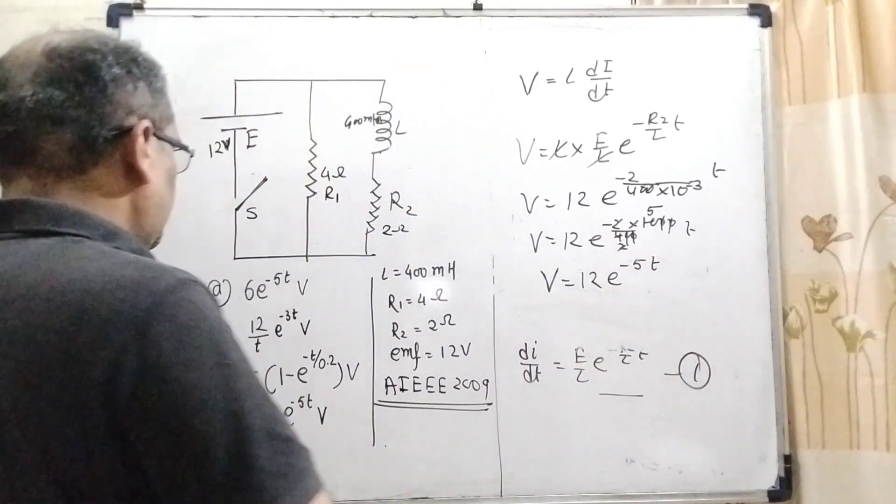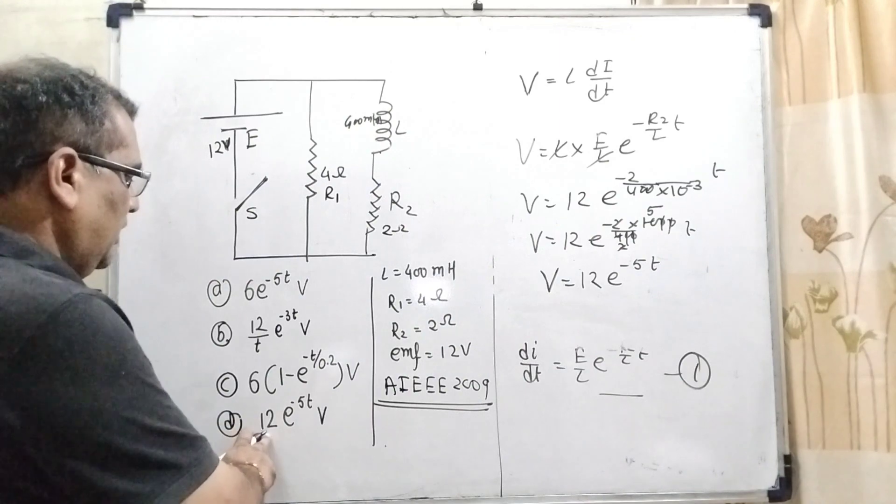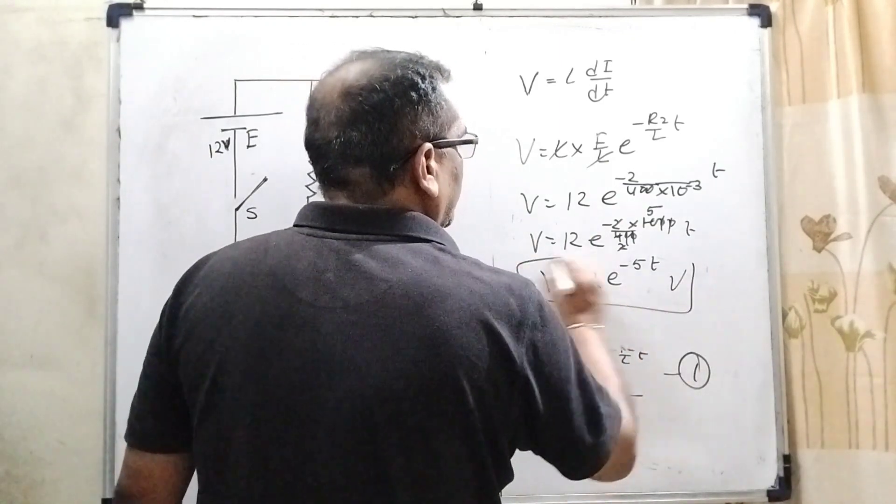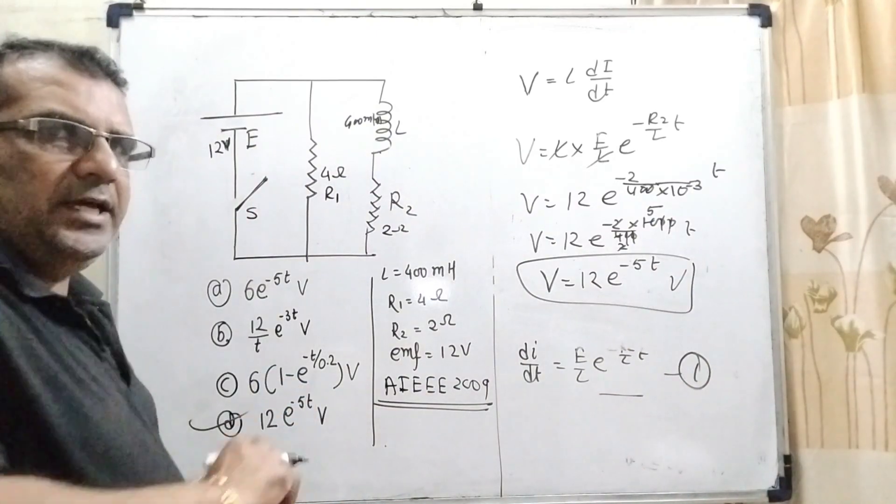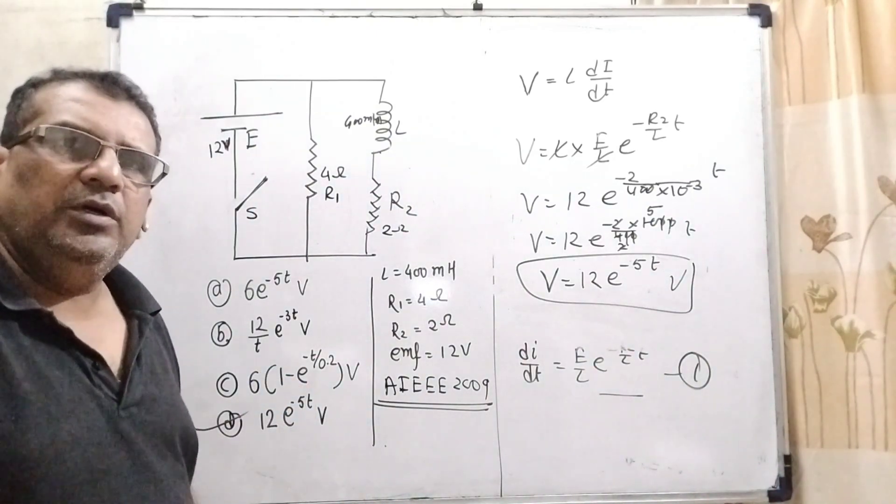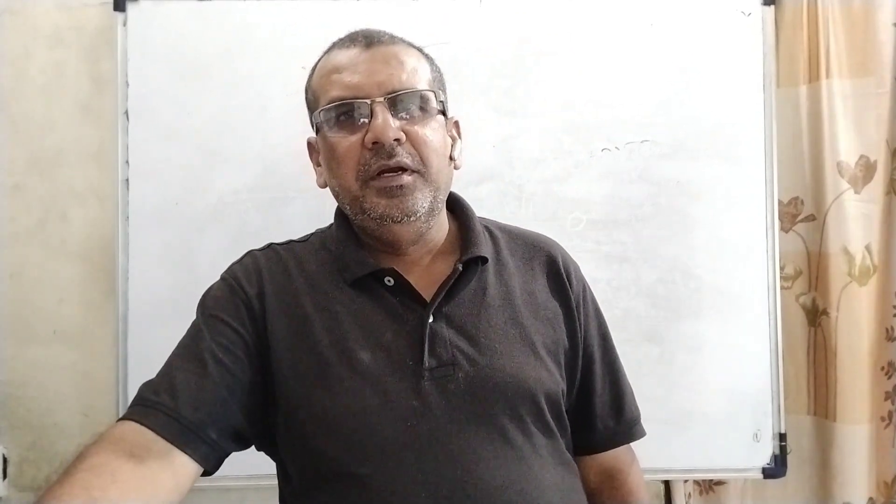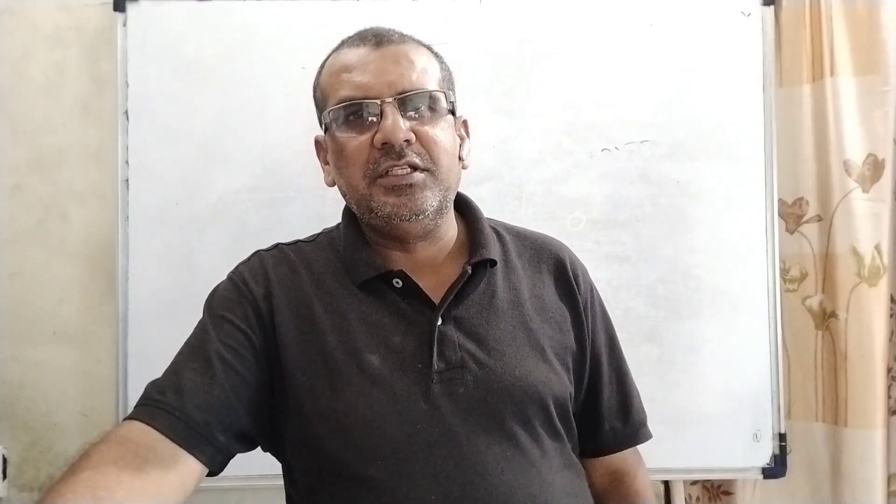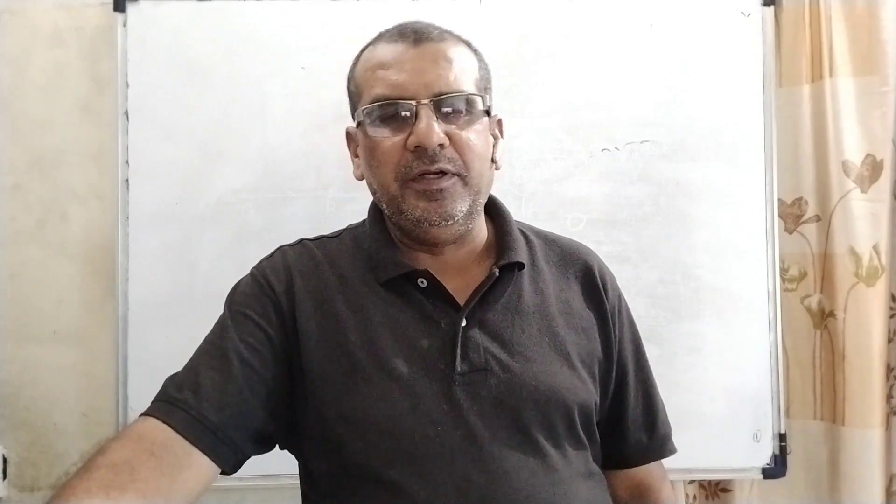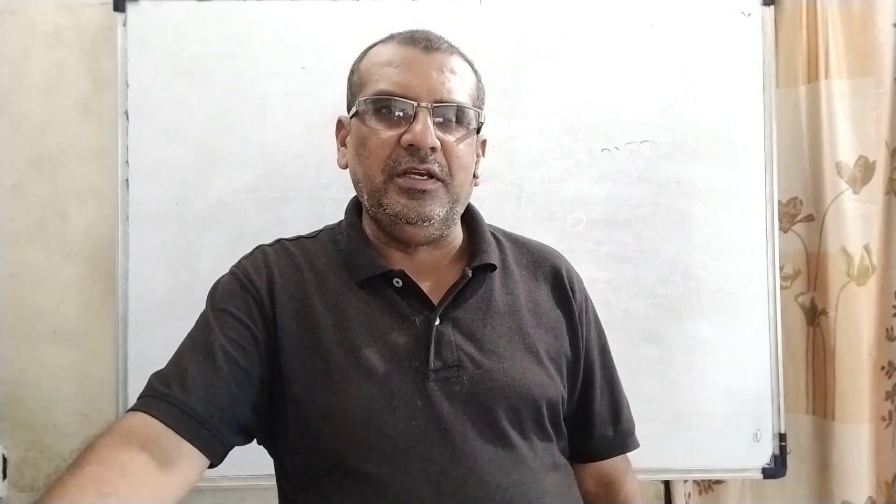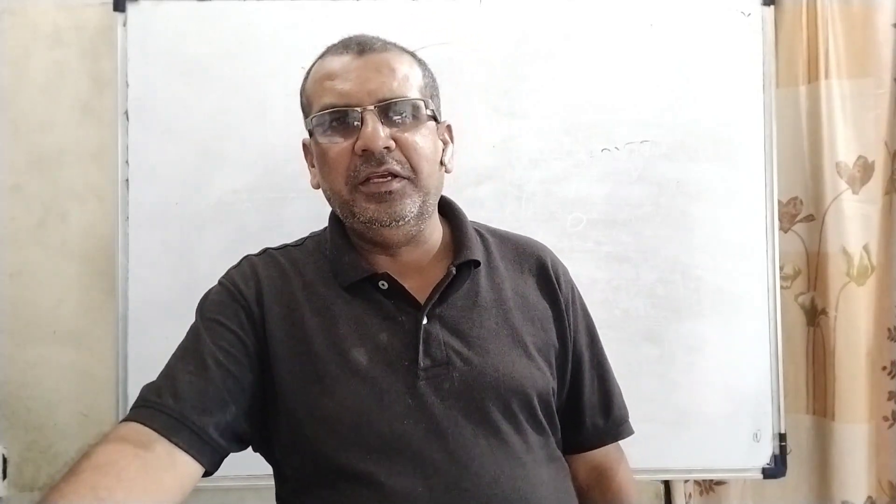Let us see which option is matching here. 12 E raised to power minus 5T volt. So here option D is correct answer. I hope you understood this question. Thank you for staying till the end of this video. Definitely for your success, all the credit goes to your hard work. But if my video will help for your success, then I will consider myself lucky. Thank you once again, take care, bye-bye.